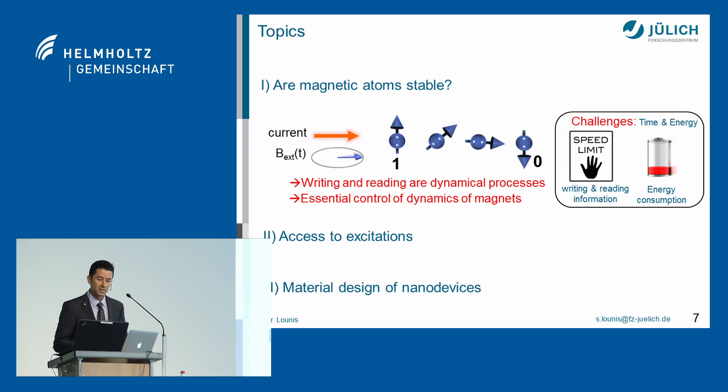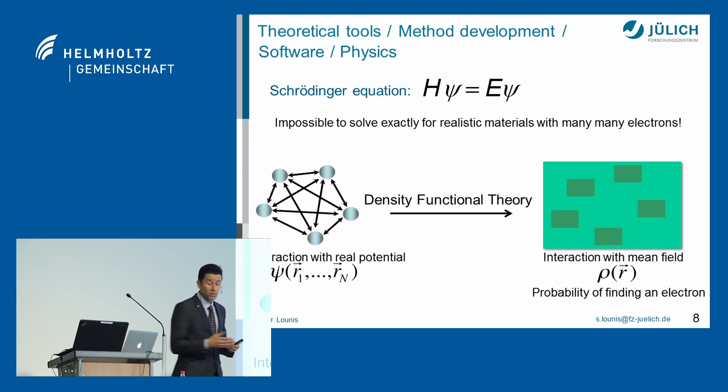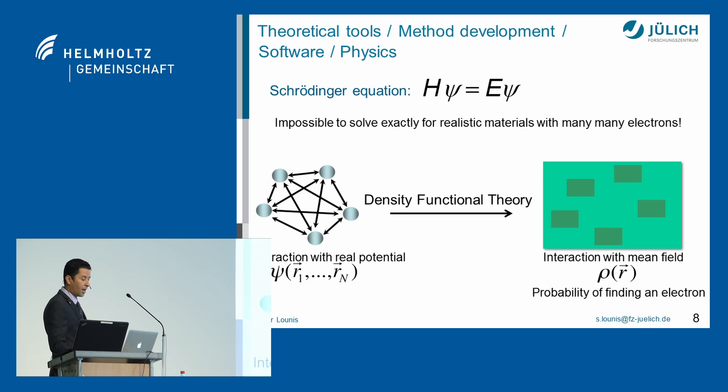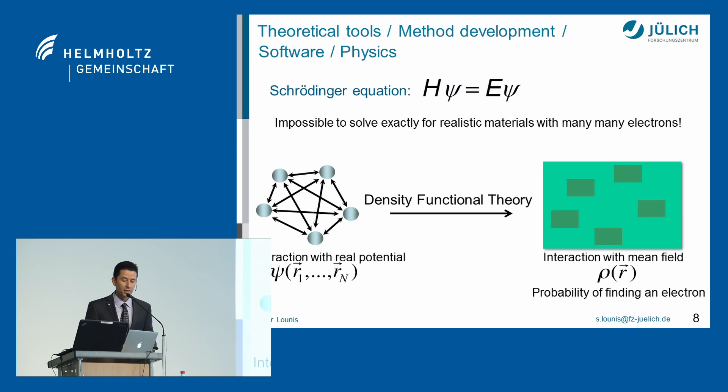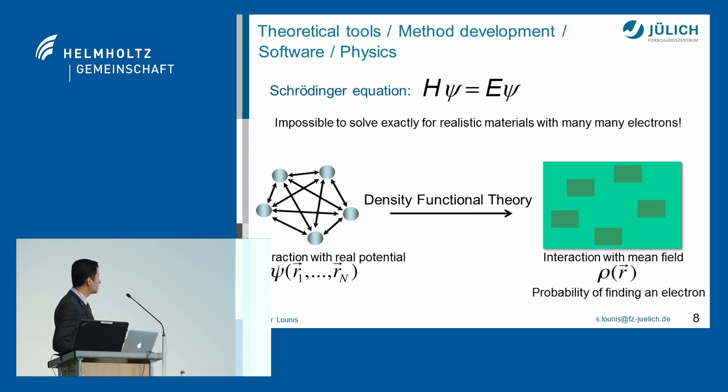To look into this, we have to use quantum mechanics — we have to solve a Schrödinger equation, which describes the particles of your material. Since there are many of them, it's very difficult to track all of that computationally. Another way is to work with the probability of finding an electron, and this gives rise to density functional theory, which has huge predictive power and has led to many success stories in different fields.